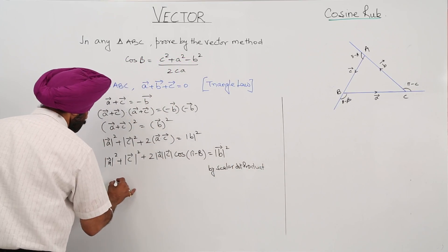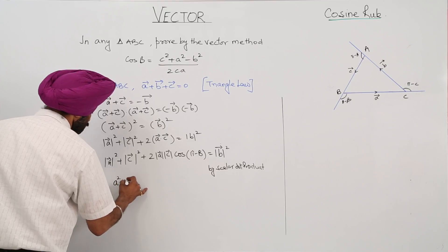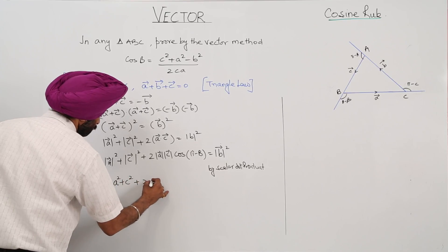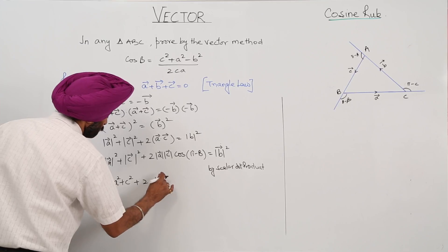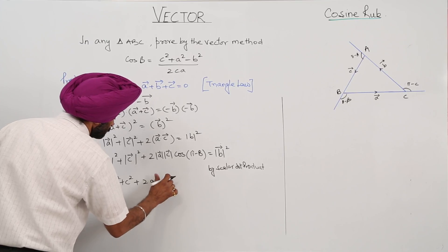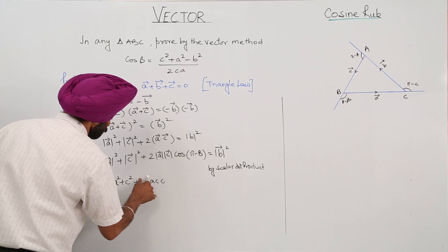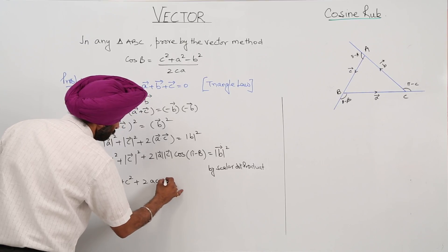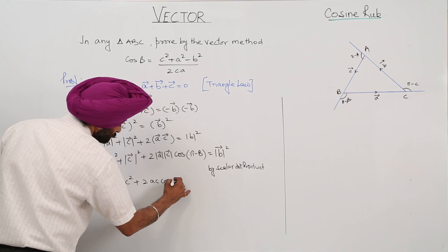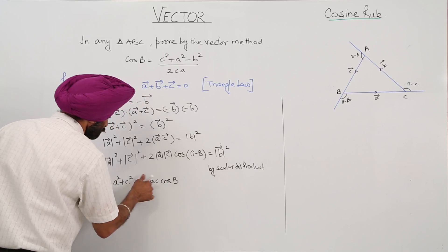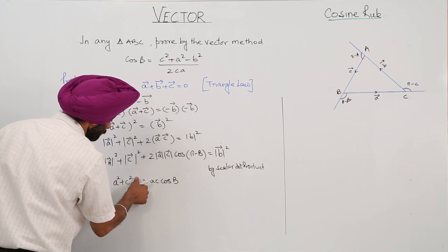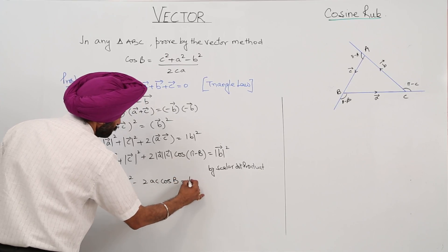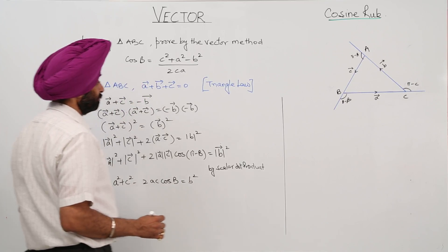This becomes a squared plus c squared plus twice of ac cos(π minus B), and since cos(π minus B) is negative, this equals b squared.